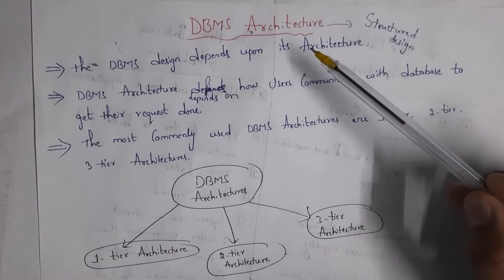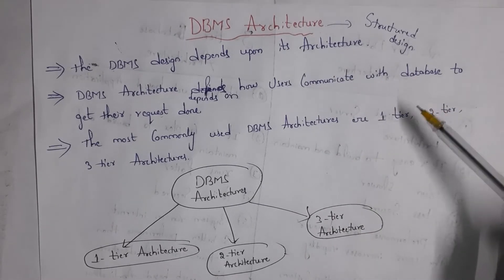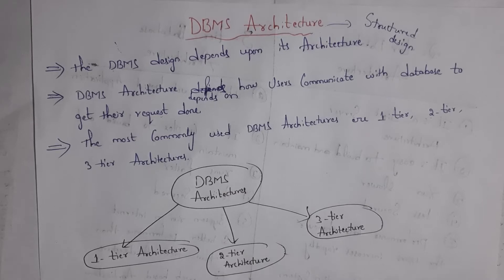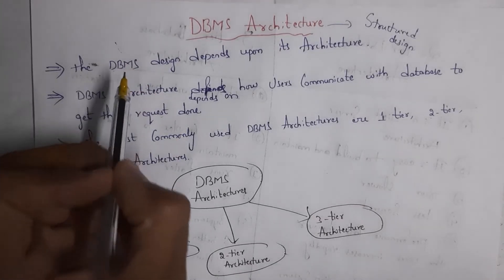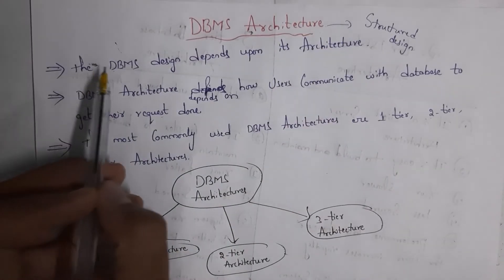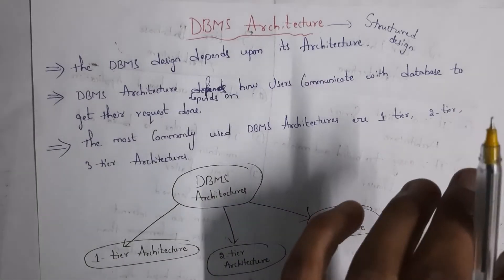Architecture is nothing but a structured design. For example, if I want to construct a house, I will go to a builder. He will show me some designs of the house, and based on my requirement, I will choose one design. My house construction depends on the house architecture. Similarly, if you want to design any DBMS software, your DBMS design depends upon the DBMS architecture.